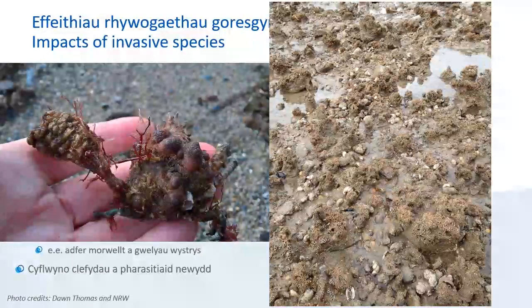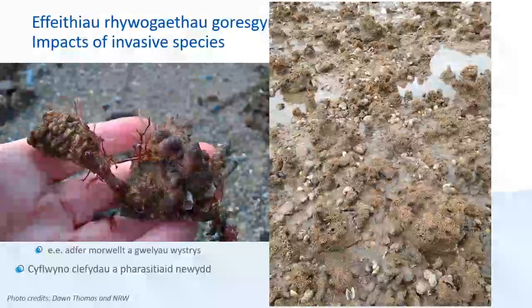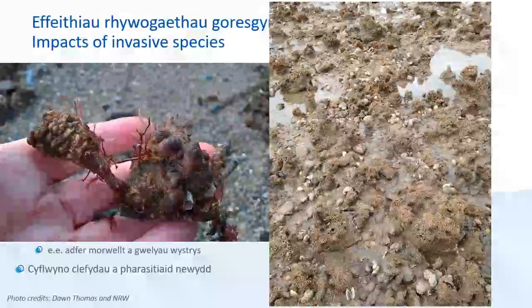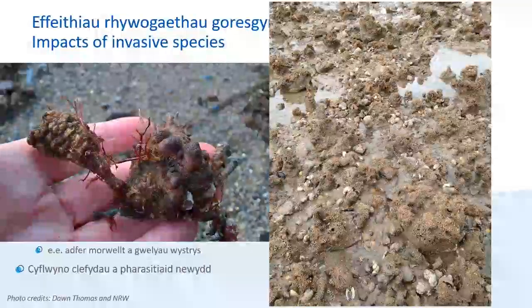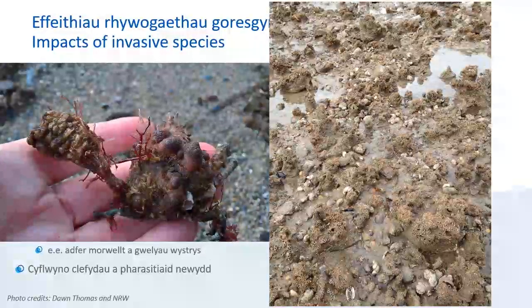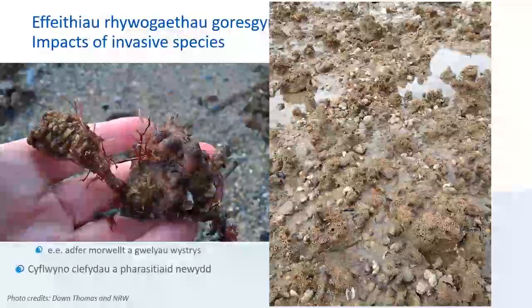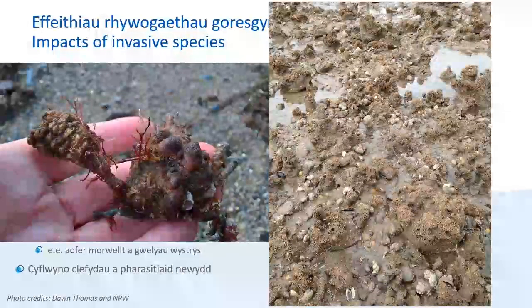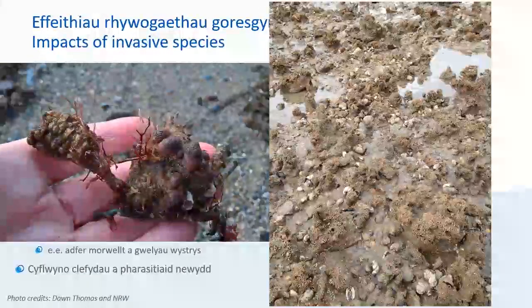These two photos show some of the impacts that INNS can have. On the left you can see a crab that has been heavily fouled by leathery sea squirts, among other things. Heavy fouling can decrease the ability of the fouled individual to escape predators or catch prey, ultimately reducing survival. On the right, the photo shows the shells of American slipper limpets which have started to accumulate on this intertidal area. This is an ecologically important substrate created by the tube worm Thabalaria, which may be at risk if the slipper limpets continue to accumulate here.